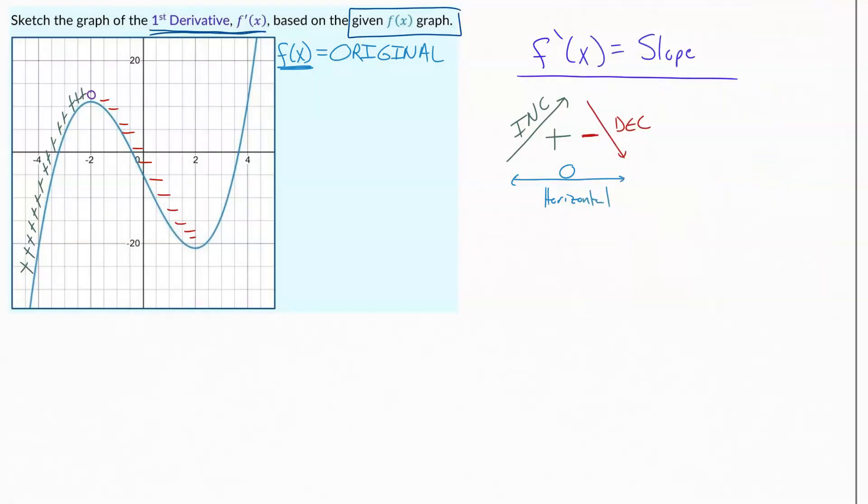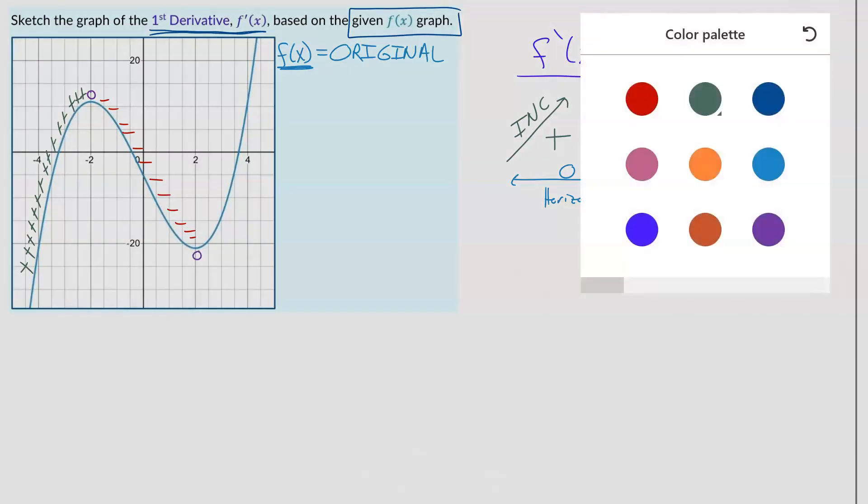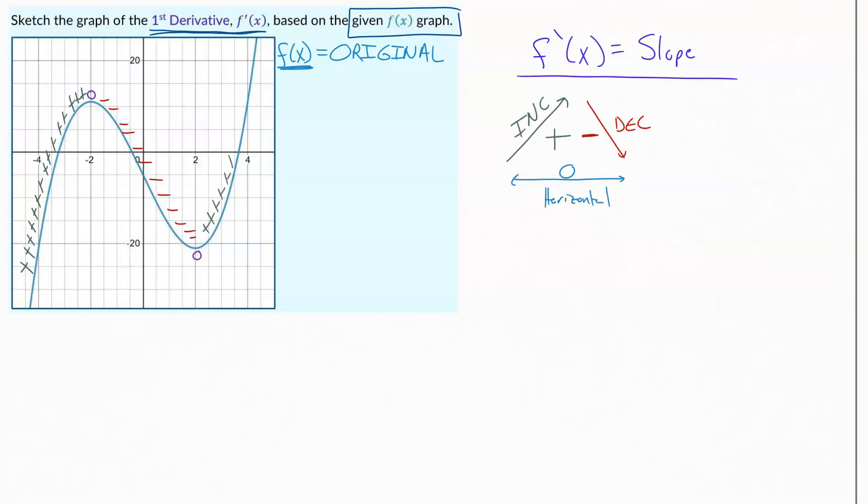Again, we get to that horizontal at the bottom, that zero right there. And then after that, we are headed up and going positive, positive, positive, positive, positive from there on forward.